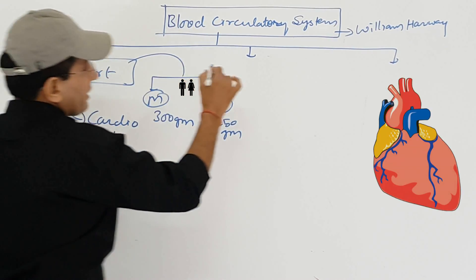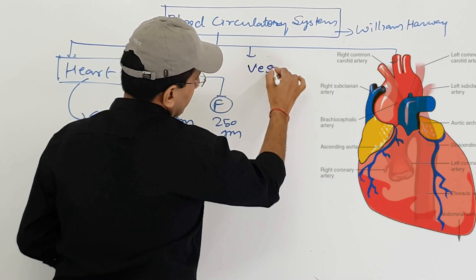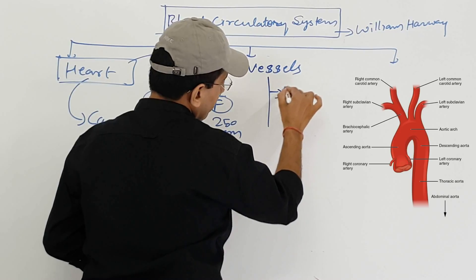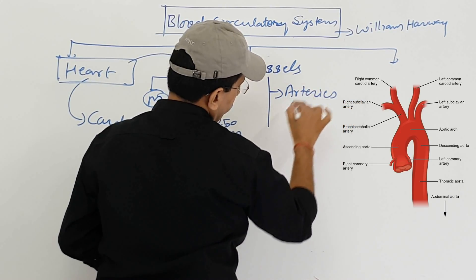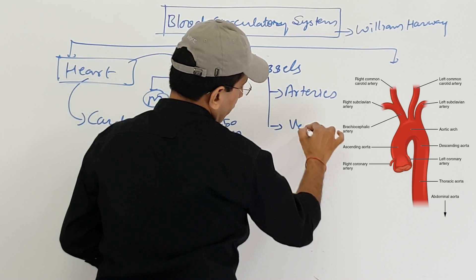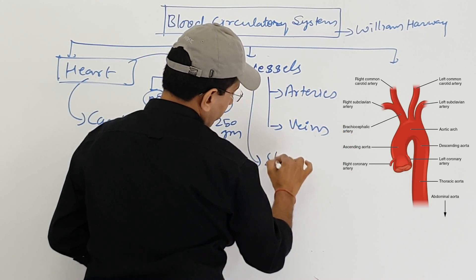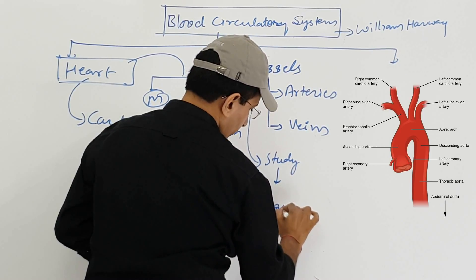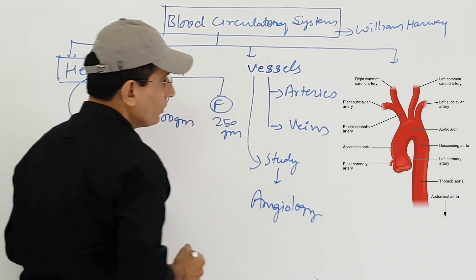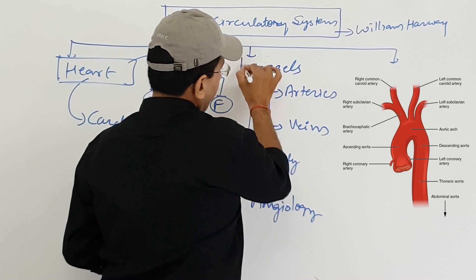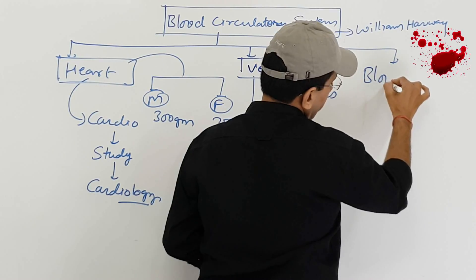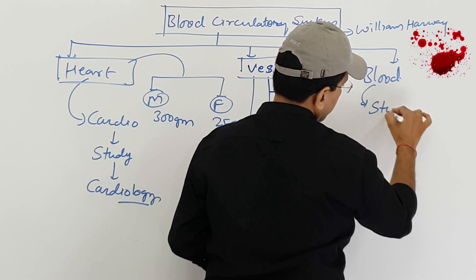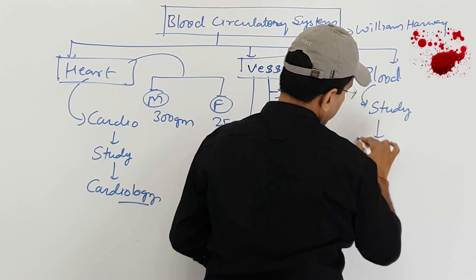The second part is vessels, which are divided into two parts: arteries and veins. The study of vessels is known as angiology. The third part is blood, and the study of blood is known as hematology. Heme is a Latin word; the meaning of heme is iron. In our human body's blood, ferrous iron is present, which combines with oxygen with the help of hemoglobin and transfers it throughout the body.